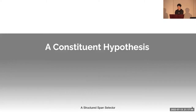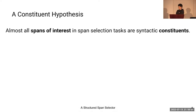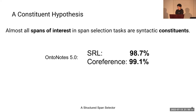We now move on to the key hypothesis of our paper: a constituent hypothesis. We claim that most of the spans of interest in span selection tasks are syntactic constituents. This claim sounds empirically true, and it is also reflected in many annotation instructions. For instance, in the OntoNotes dataset, the annotators are given a parse tree to assist their annotation, and they are explicitly asked to align their annotations to the parse tree. We tested this on the OntoNotes dataset for both semantic role labeling and coreference resolution and found it to be true in almost all cases.